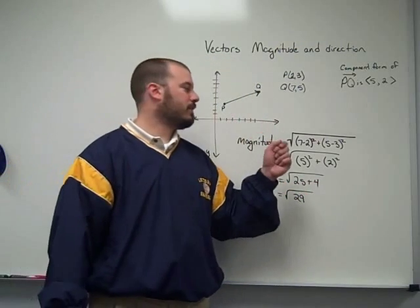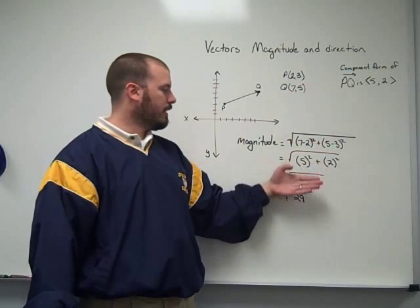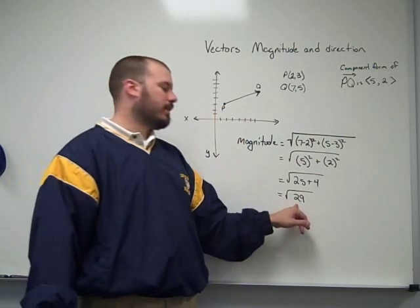All right, so this is the distance formula: 7 minus 2 quantity squared, plus 5 minus 3 quantity squared. And then I just solved that or simplified that right side of the equation.